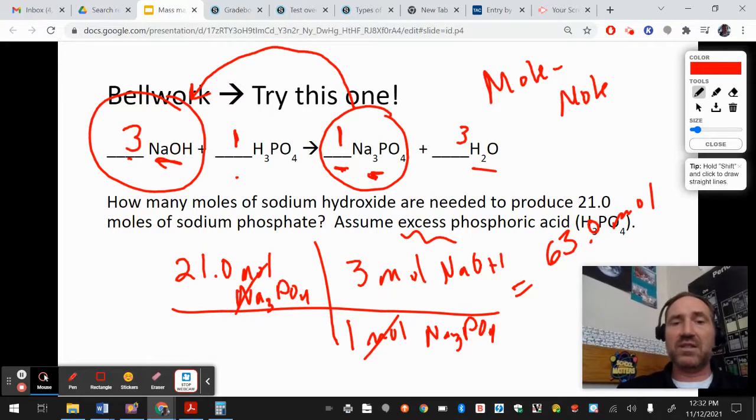This is called a mole-mole problem. And mole-mole problems just go right to the ratio. So if I have 21 moles of Na3PO4, and I know in the balanced equation this is the ratio, one mole of Na3PO4 is equal to three moles of NaOH. And if you take 21 times three, which I know is 63, that will give you how many moles of NaOH is made. So 63 moles is made when 21 moles of sodium phosphate is produced.